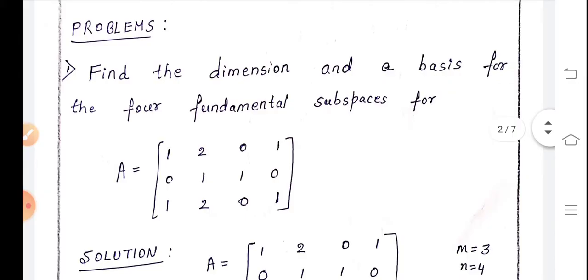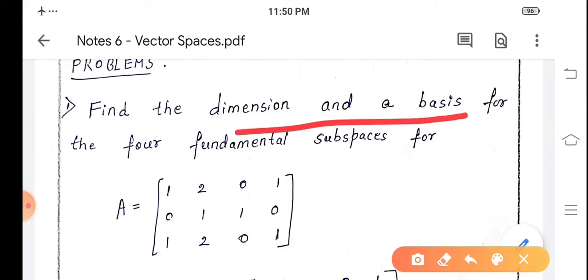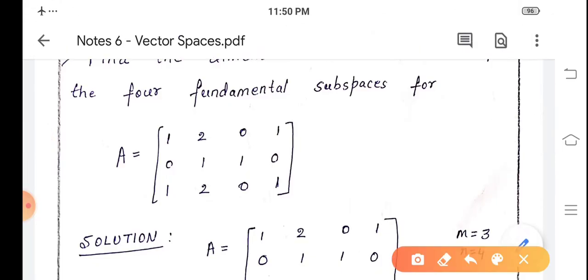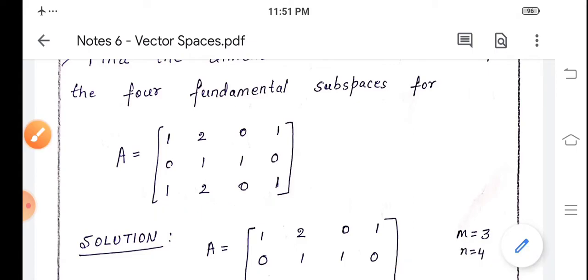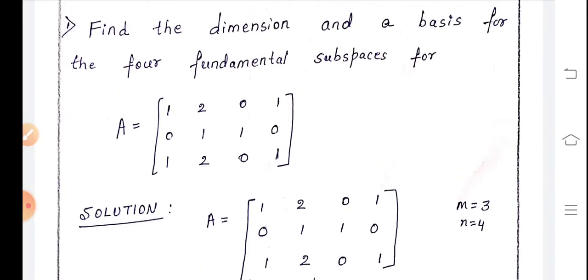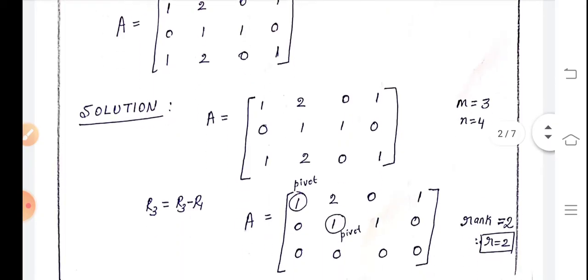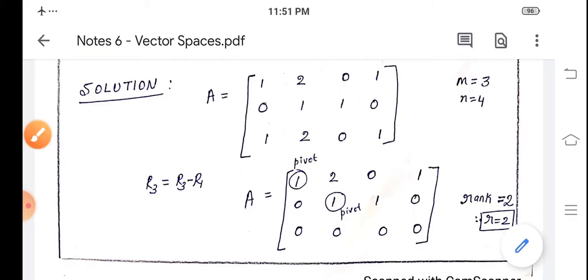Now let us work out a problem on four fundamental subspaces. The first problem is: find the dimension and basis for the four fundamental subspaces for the matrix A, where the first row is [1 2 0 1], second row is [0 1 1 0], and third row is [1 2 0 1]. We have to find the basis and dimension for the column space, null space, row space, and left null space of A.